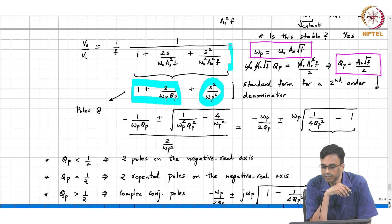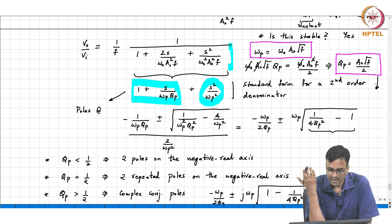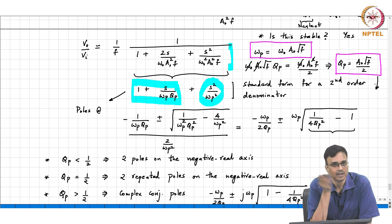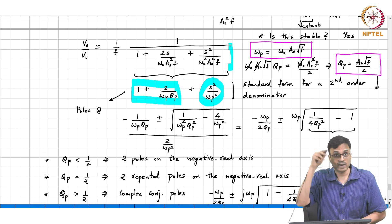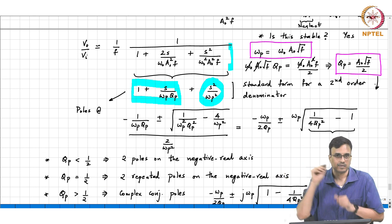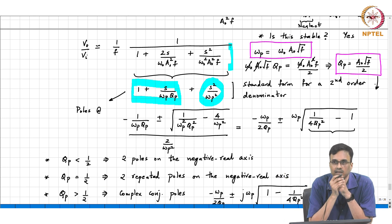The Q we got for our closed loop system is A naught root f by 2. Is this a large number or a small number? It is a large number. Remember that a naught square f, we want it to be very very large - maybe 10,000. Then a naught root f by 2 will be root of 10,000 by 2, which is 50. That basically means you go and hit the amplifier with a step, and then it will ring 50 times before it finally settles.